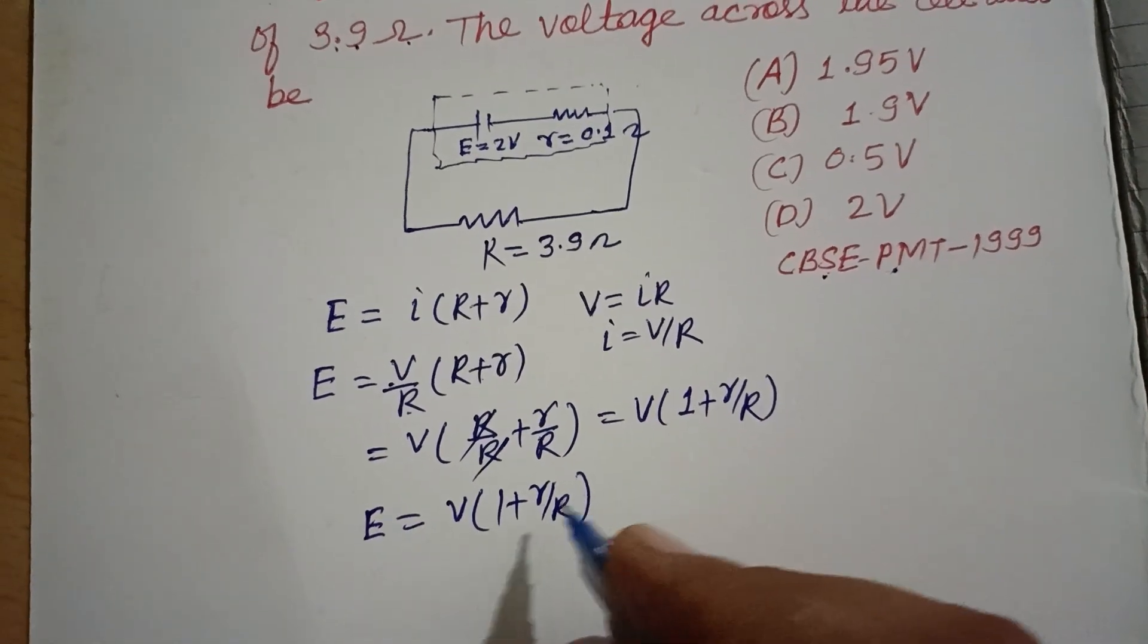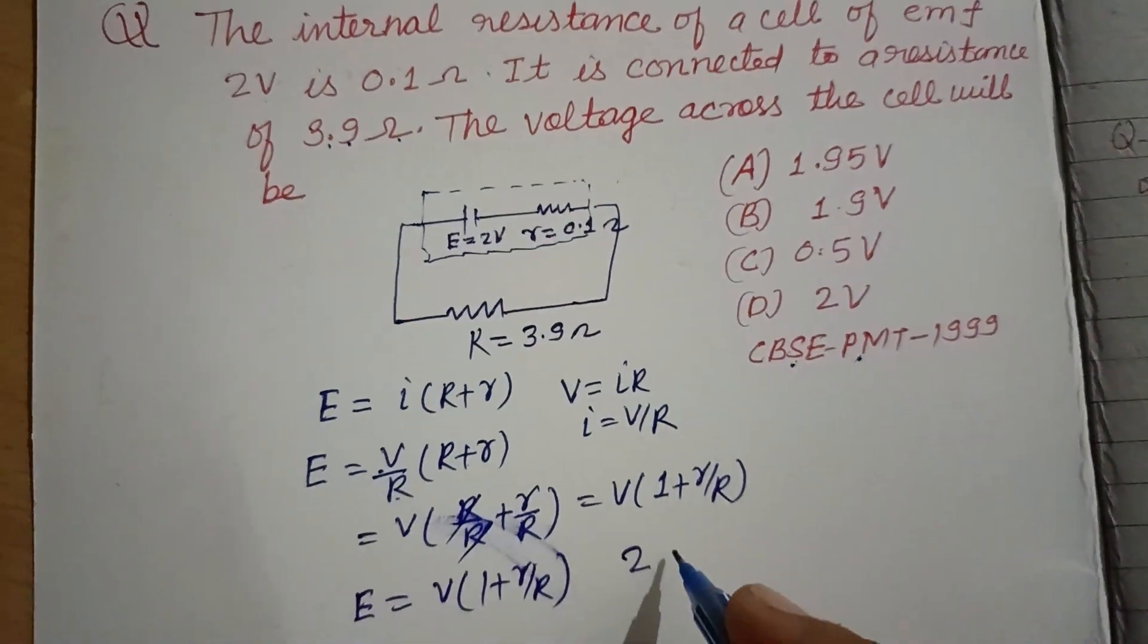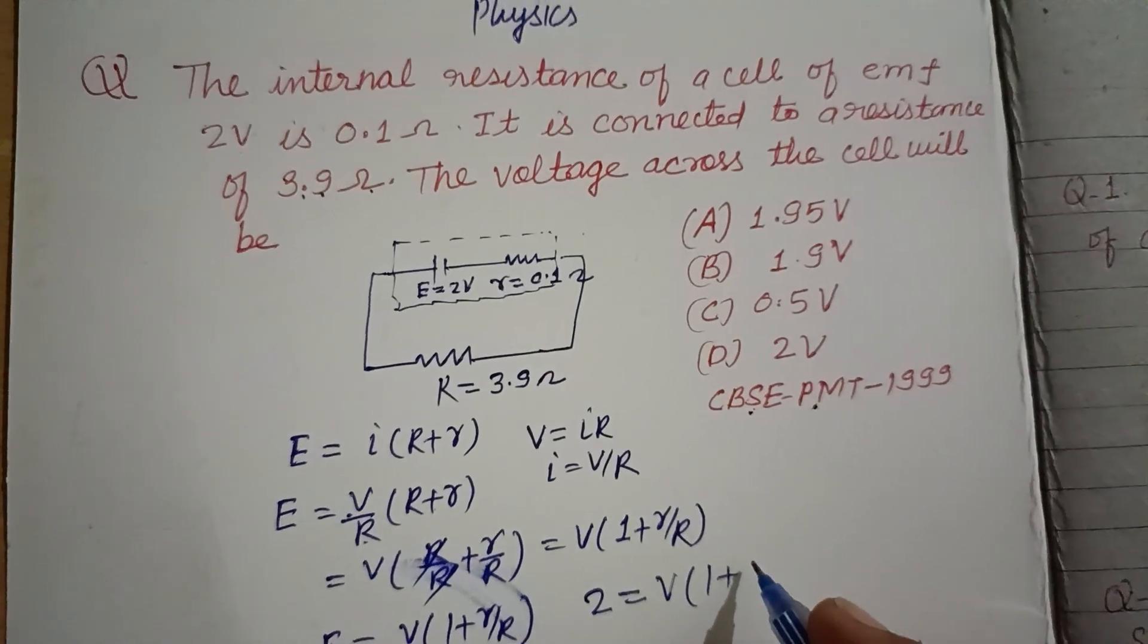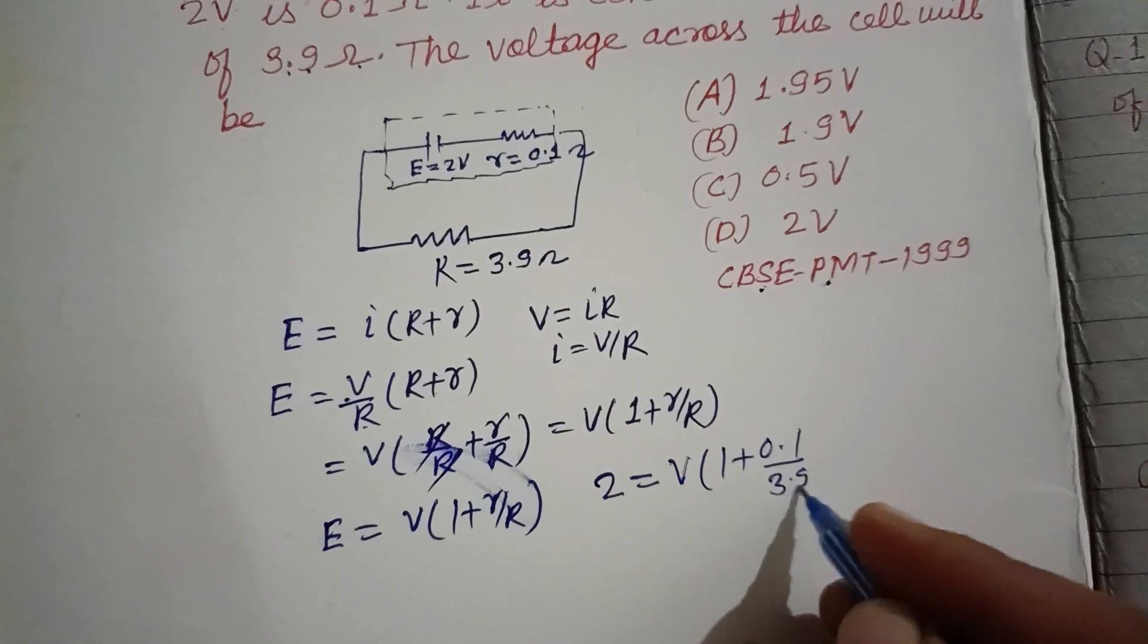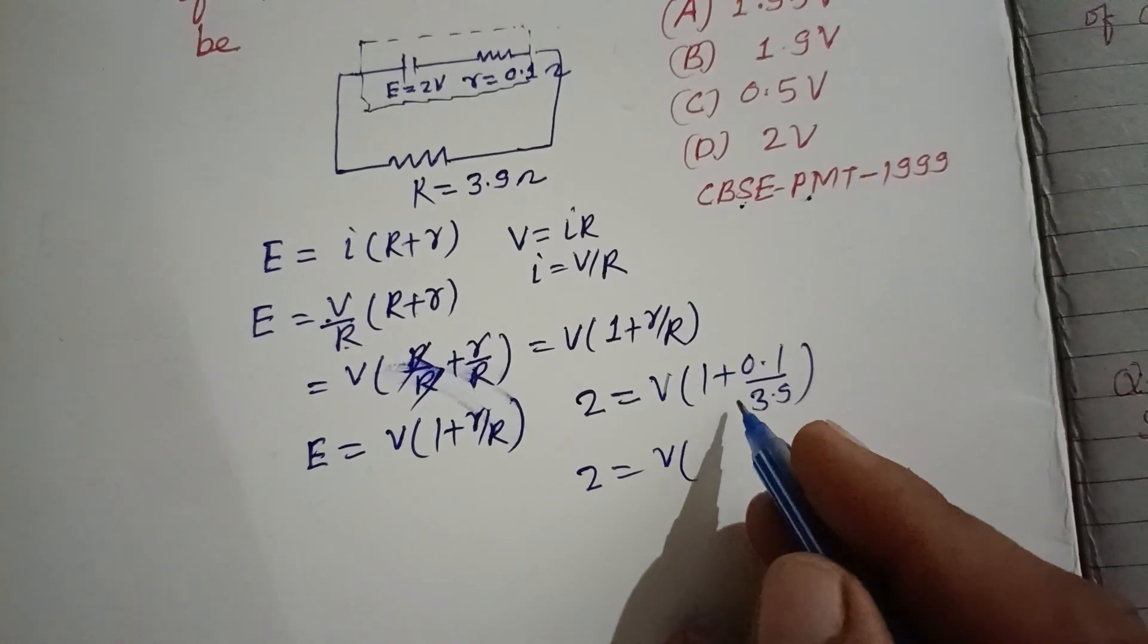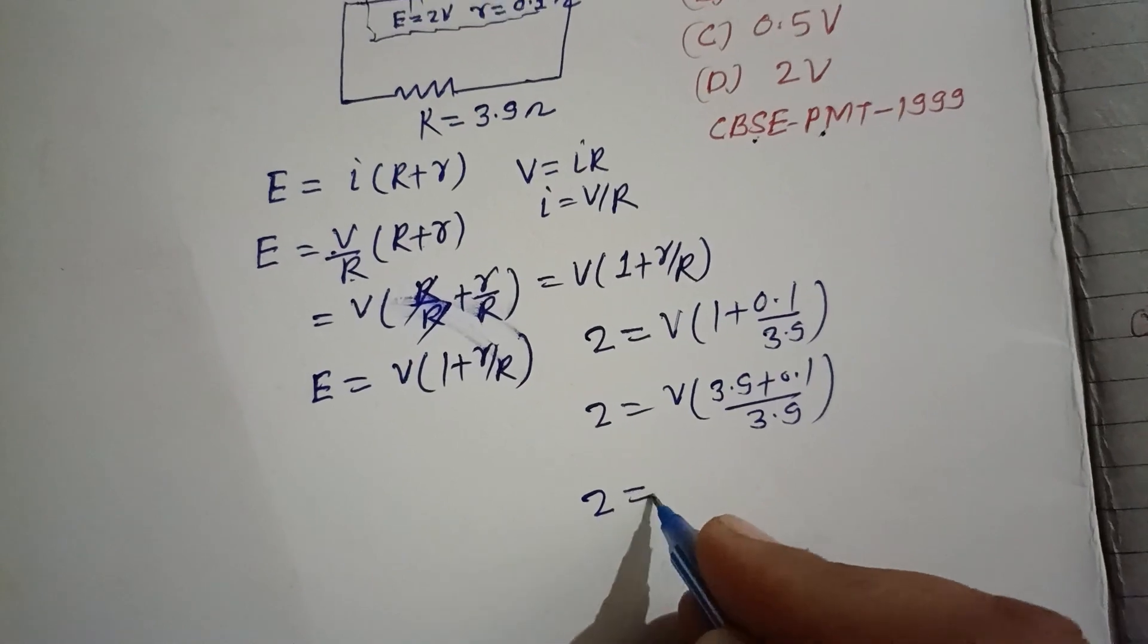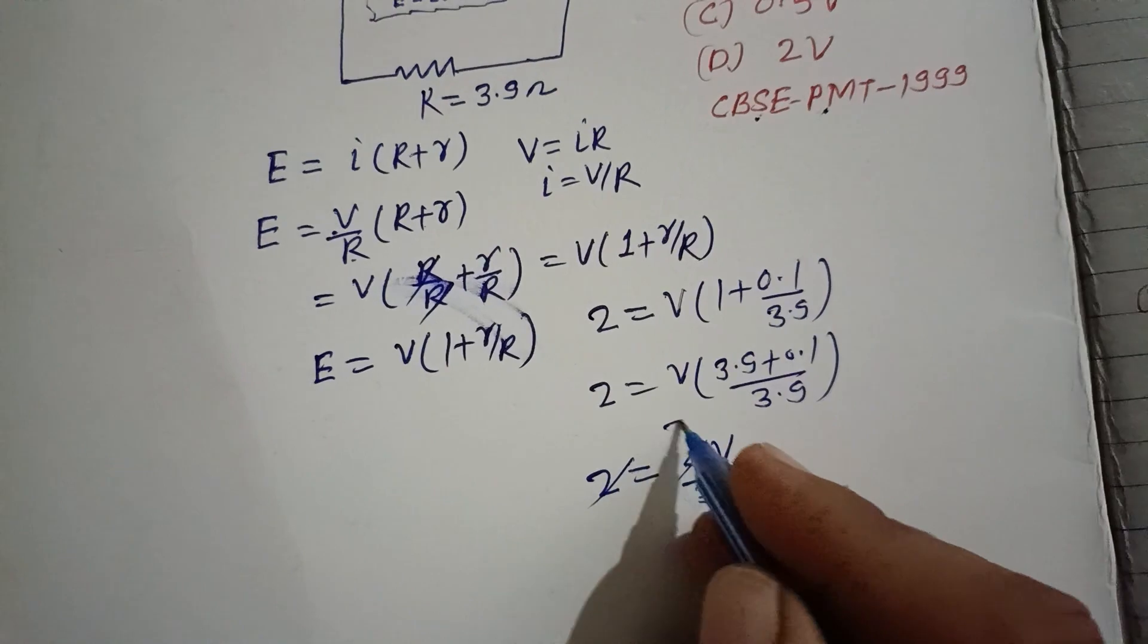Now putting the values that E is given to us as 2 volt. 2 volt equals V into 1 plus r is 0.1 upon capital R is given as 3.9. So 2 equals V into 3.9 plus 0.1 upon 3.9. So 2 equals 4V upon 3.9. Therefore 3.9 equals 2V or V equals 3.9 by 2.